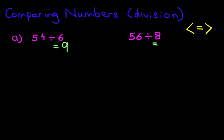How about this one? 56 divided by 8. Well, the answer is 7. So now we are comparing the 9 and the 7. Which number is smaller? That simple. It is the 7. So 54 divided by 6 is greater than 56 divided by 8.